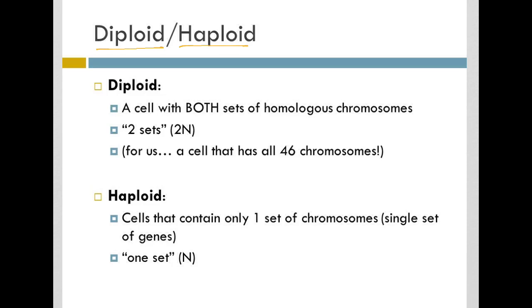Our chromosomes typically come in pairs, and so because they come in pairs, most of our cells are what we consider diploid. A diploid cell is a cell with both sets of homologous chromosomes. You should note that that di prefix in diploid means two.